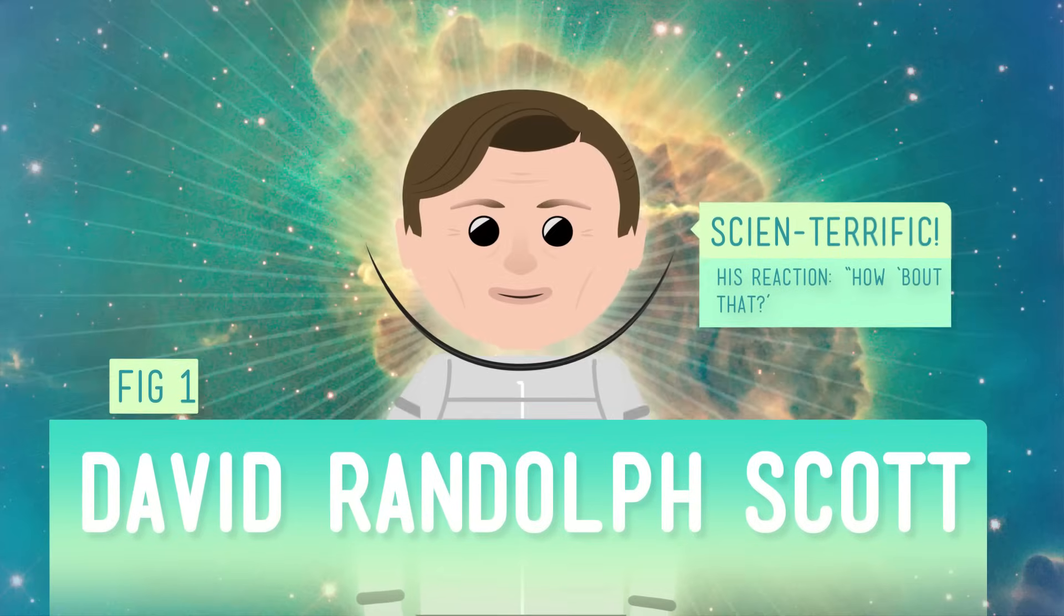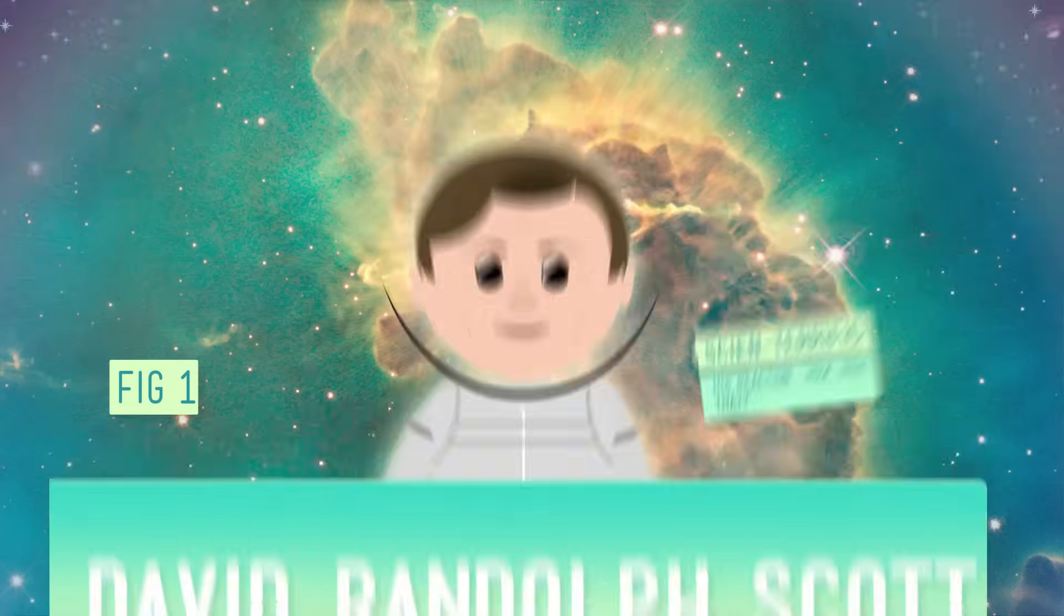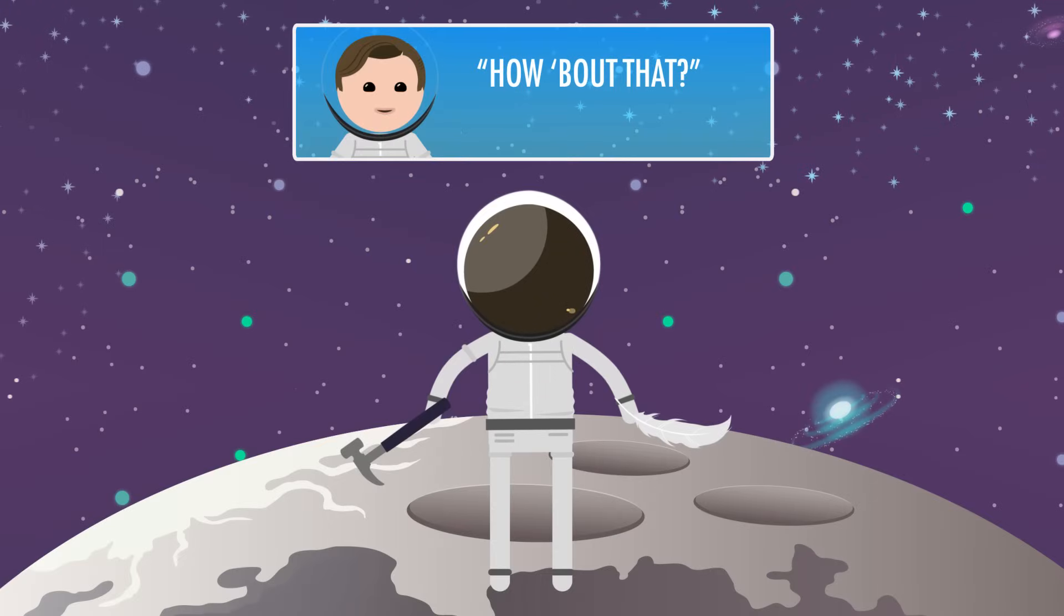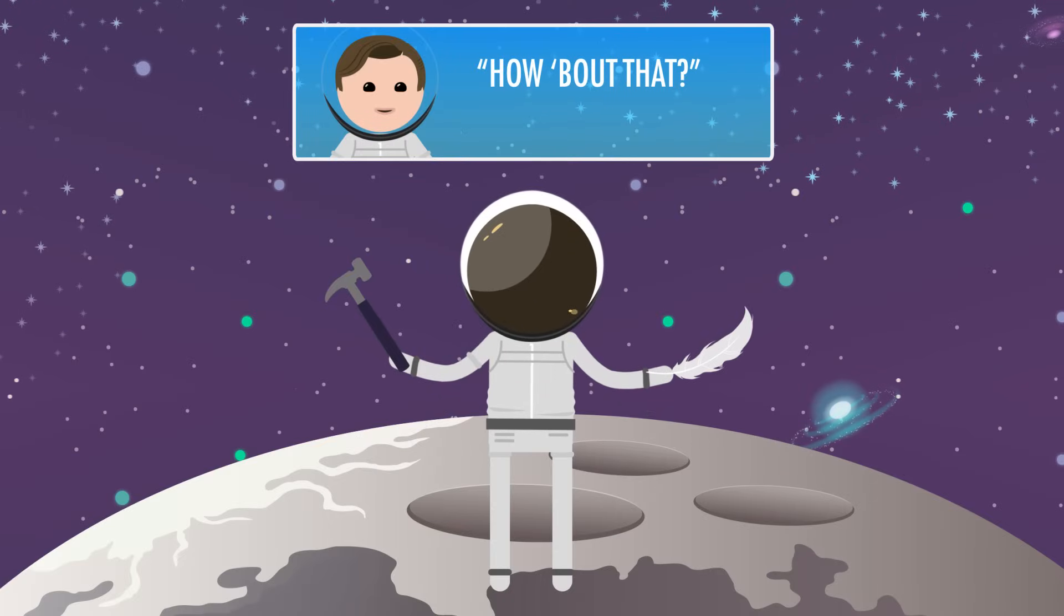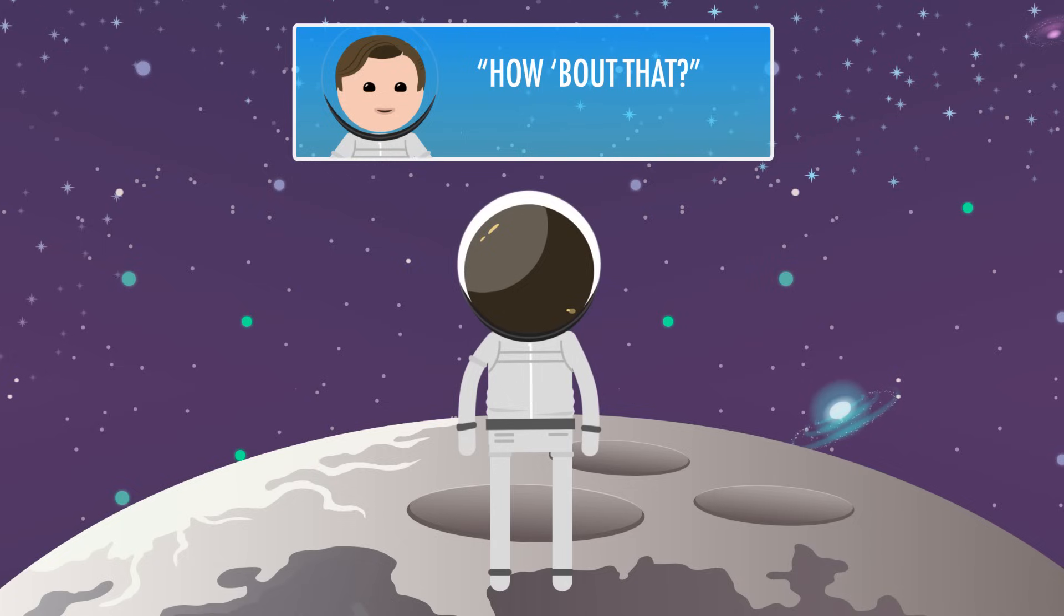Except, the thing I just said about the hammer and the feather? Someone did actually try that, and they did both hit the ground at the same time. It just didn't happen on Earth. True story. When astronaut Dave Scott was on the Moon in 1971, he did an experiment where he dropped a falcon feather and a hammer from the same height, and they hit the ground at the same time.